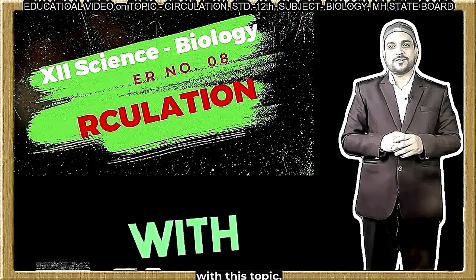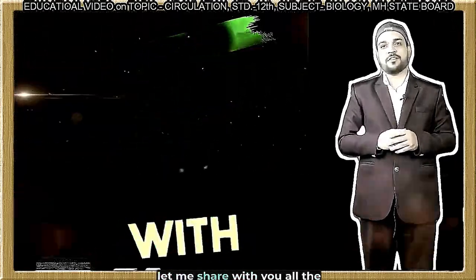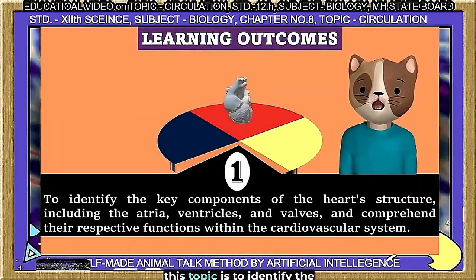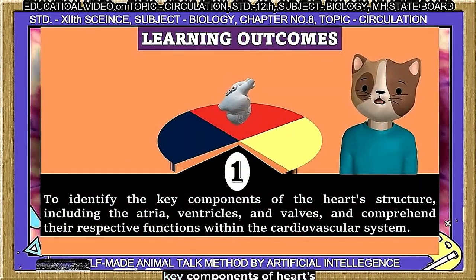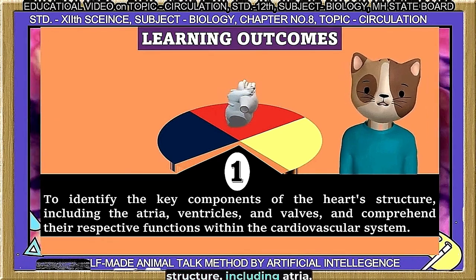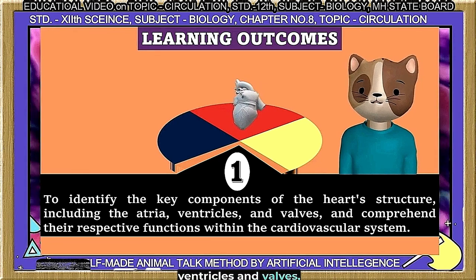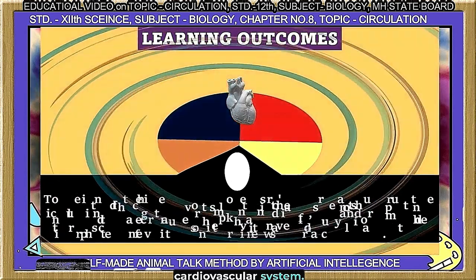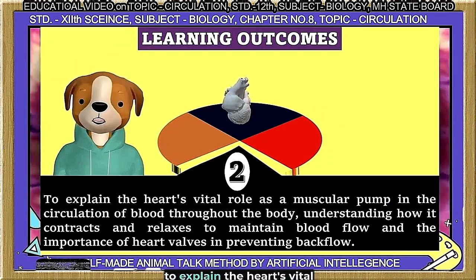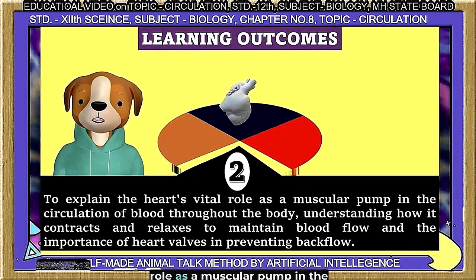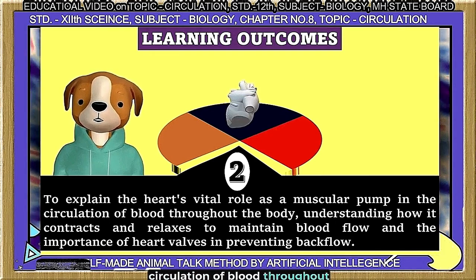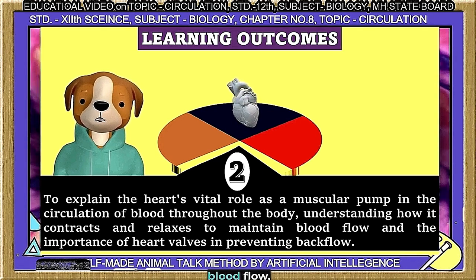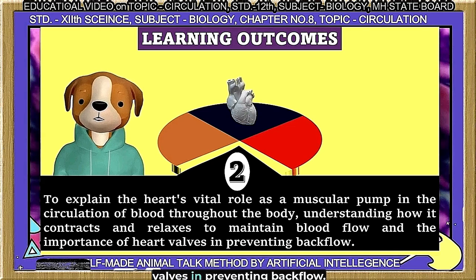Before going to start with this topic, let me share with you all the learning outcomes and objectives of this chapter. The first learning outcome is to identify the key components of the heart's structure including atria, ventricles, and valves, and comprehend their respective functions within the cardiovascular system. The second learning outcome is to explain the heart's vital role as a muscular pump in the circulation of blood throughout the body, understanding how it contracts and relaxes to maintain blood flow and the importance of heart valves in preventing backflow.